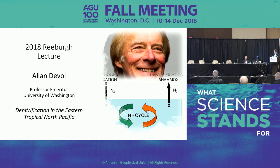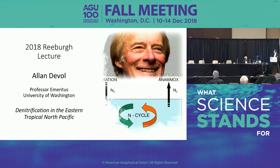He also studies the chemistry of low oxygen and anoxic marine environments, and has done field work from the Arctic to the Eastern Tropical Pacific, the Arabian Sea, the Amazon River, and local waters off Washington. He developed the Oceanic Remote Control Chemical Analyzer, which provides a near-constant stream of water quality data. Alan was elected as a Fellow of the AGU for his contributions to marine biogeochemistry, especially elemental cycling in low-oxygen water and sediments.